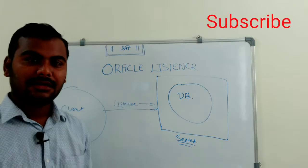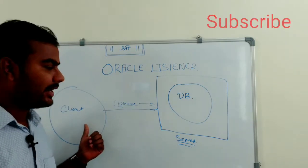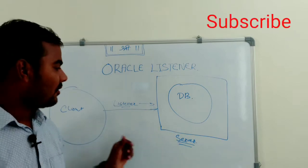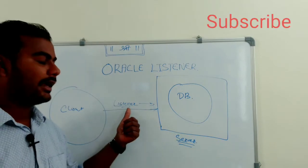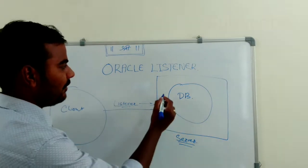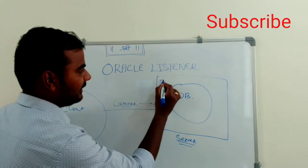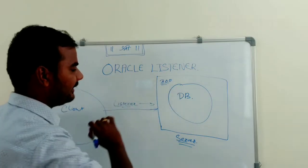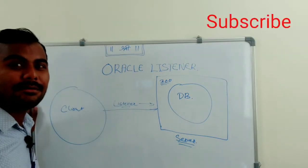So whenever your client is trying to make the connection with your Oracle database, all those connections will be taken care by the listener. Now you have 300 connections which are already there, okay? Let's say if in some case your listener goes down.